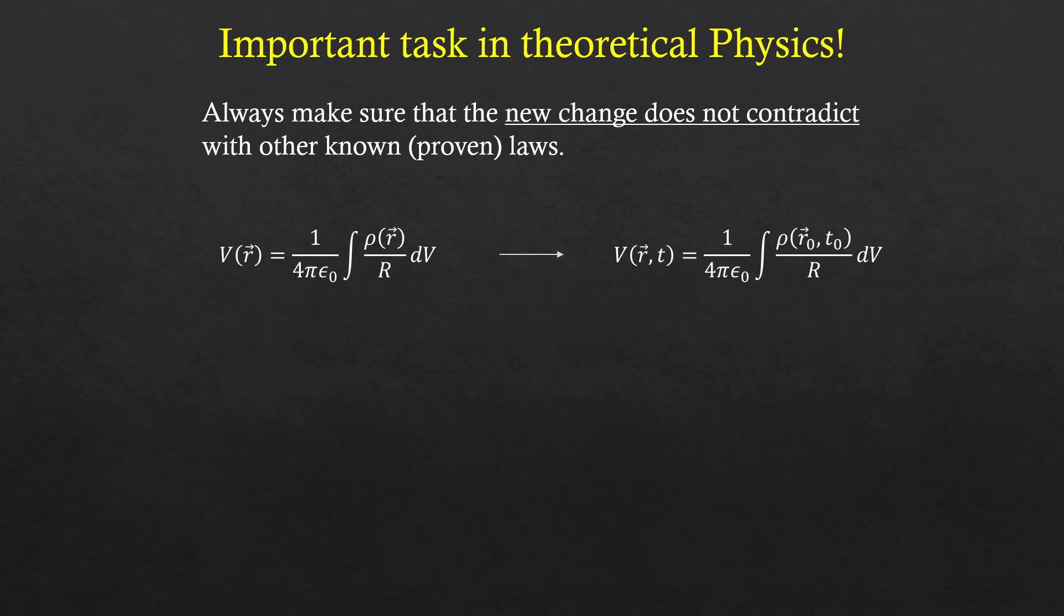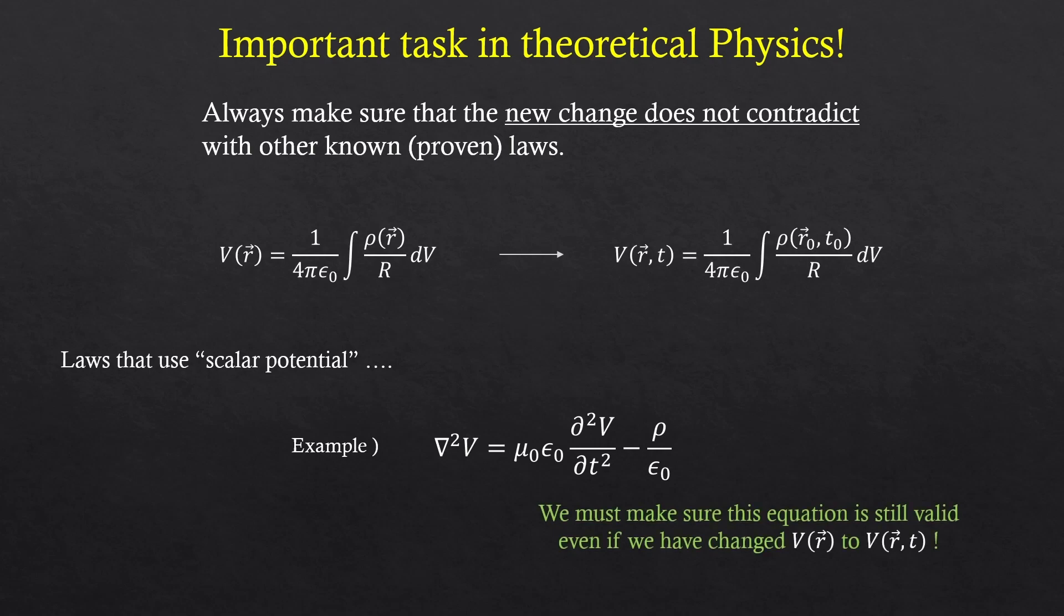Most professors never explicitly mention this to students, but when we find new equations, or modify some of the existing equations, we have to always make sure that the new change does not contradict with other known or proven laws. If we bring a new equation, and that equation forces us to change all the other laws, it will be a disaster. So, we just replaced the new charge density with the old charge density in the scalar potential, right? What I'm saying is that we must make sure that didn't affect other laws. Let's think about other laws that contain a scalar potential in their equations. As an example, there's this wave equation. I explained about this equation in the previous video, single Maxwell's equation. So, we must make sure that this equation is still valid even with the change that we made. This is a very important task in theoretical physics. Alright, I'll put the equation aside.